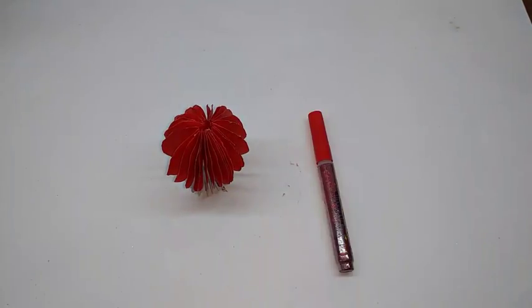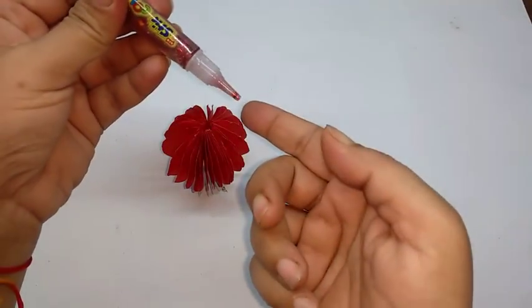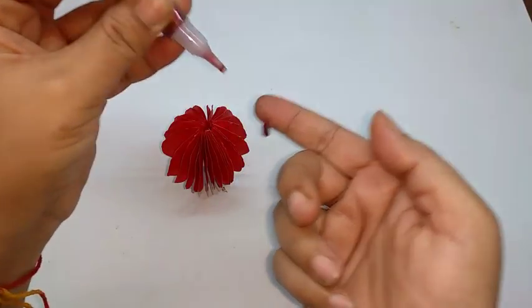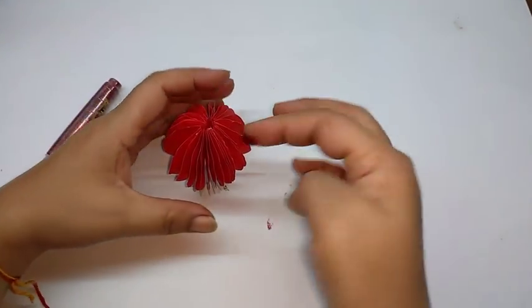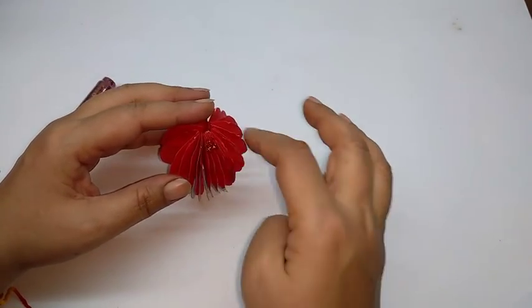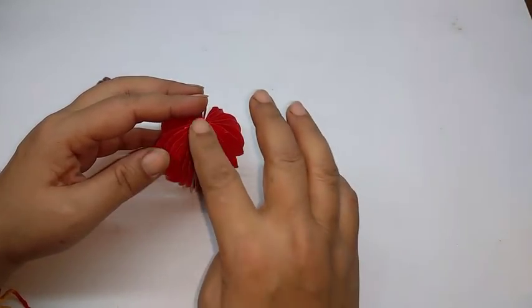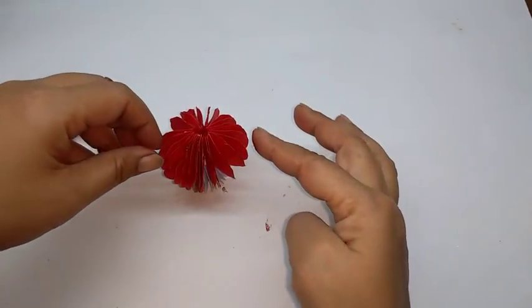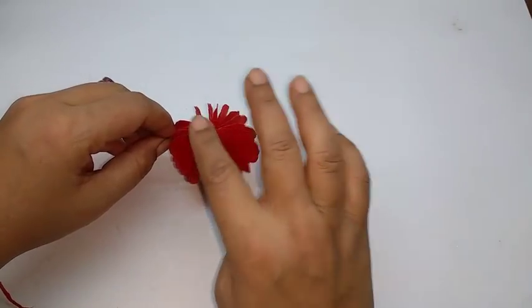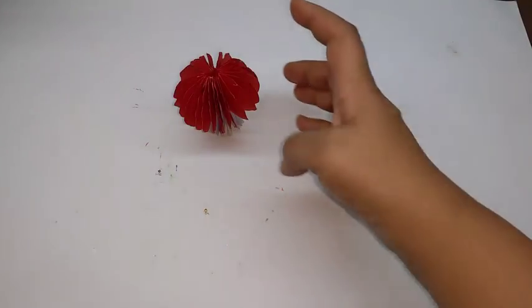Now I have this glitter glue in red color. This is optional, of course. Just take some on your finger and rub it along the edges of the mushroom. You'll get a nice glittery look. I'll do it on all the edges. This is how it will look after it's finished.